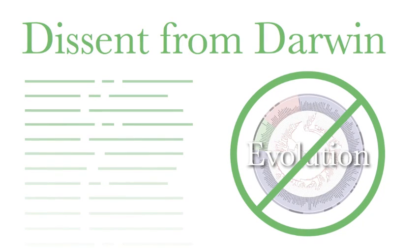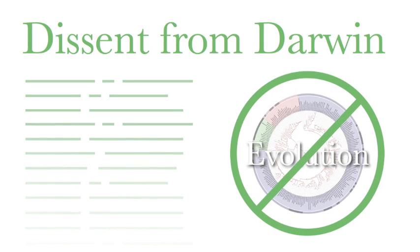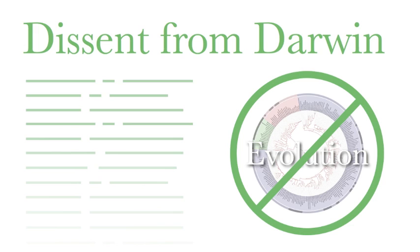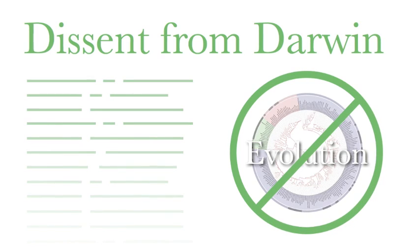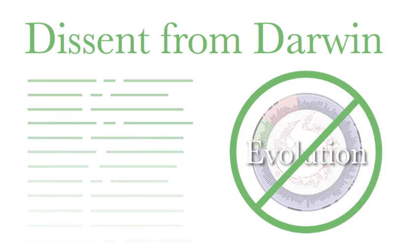In 2001, the Discovery Institute released a public statement called Dissent from Darwin, which expresses skepticism that random mutations and natural selection can account for the complexity of life. As of January 2011, over 800 scientists have signed the Dissent from Darwin list.